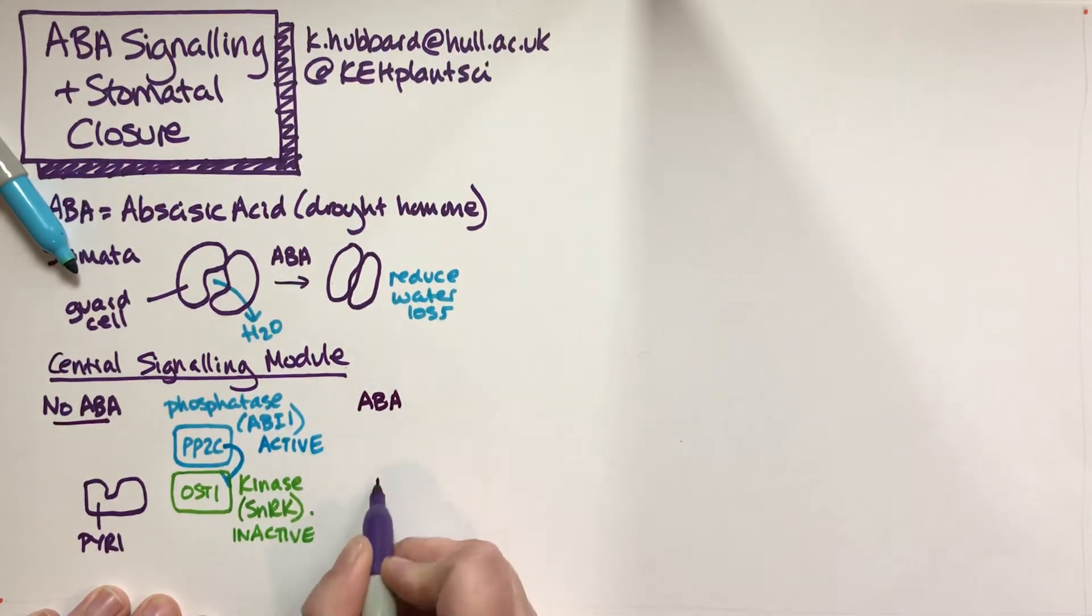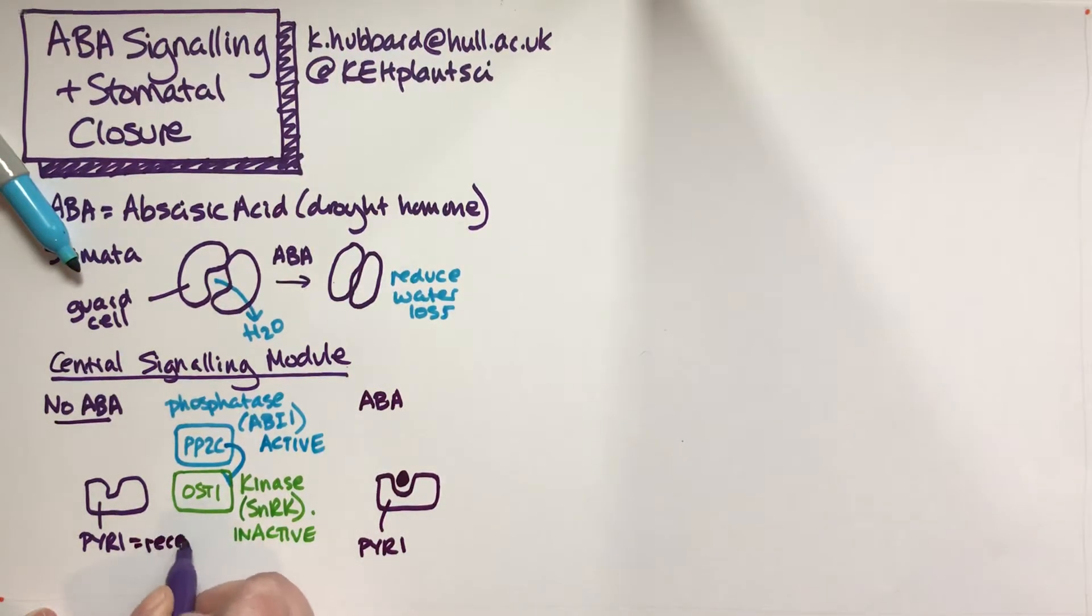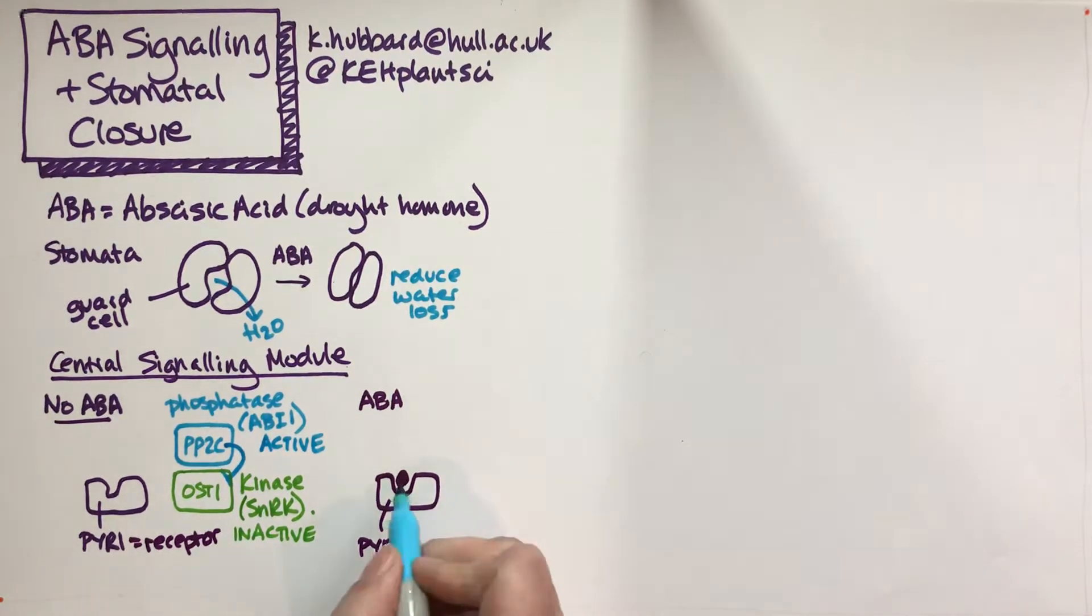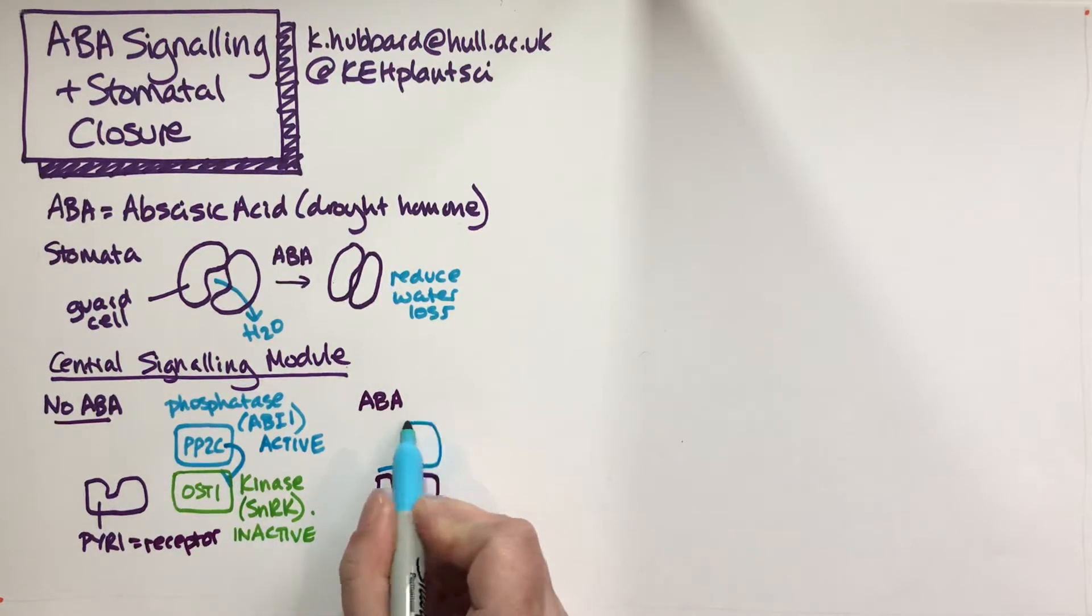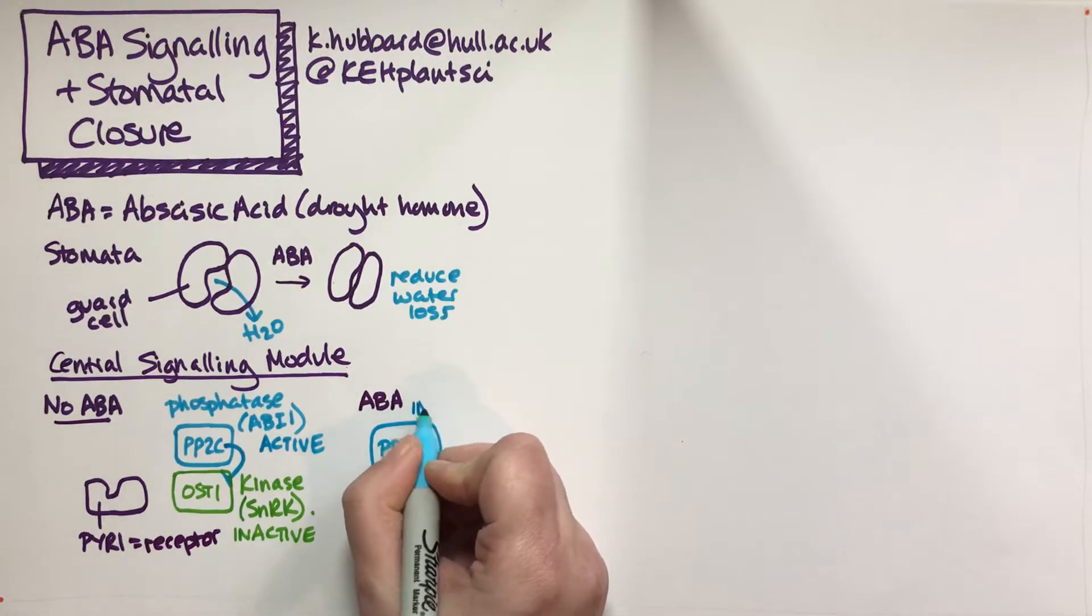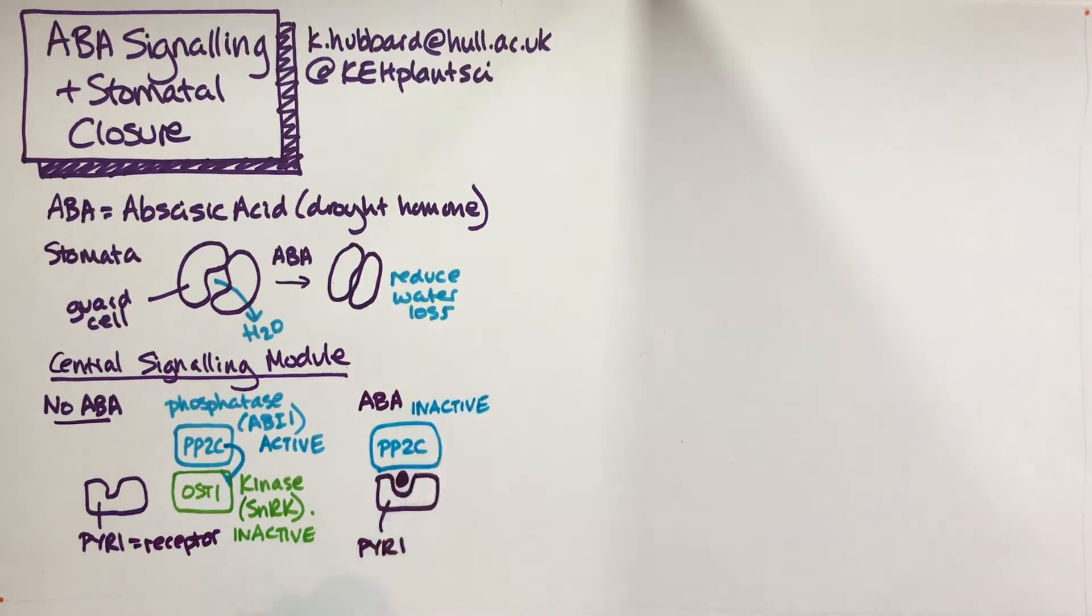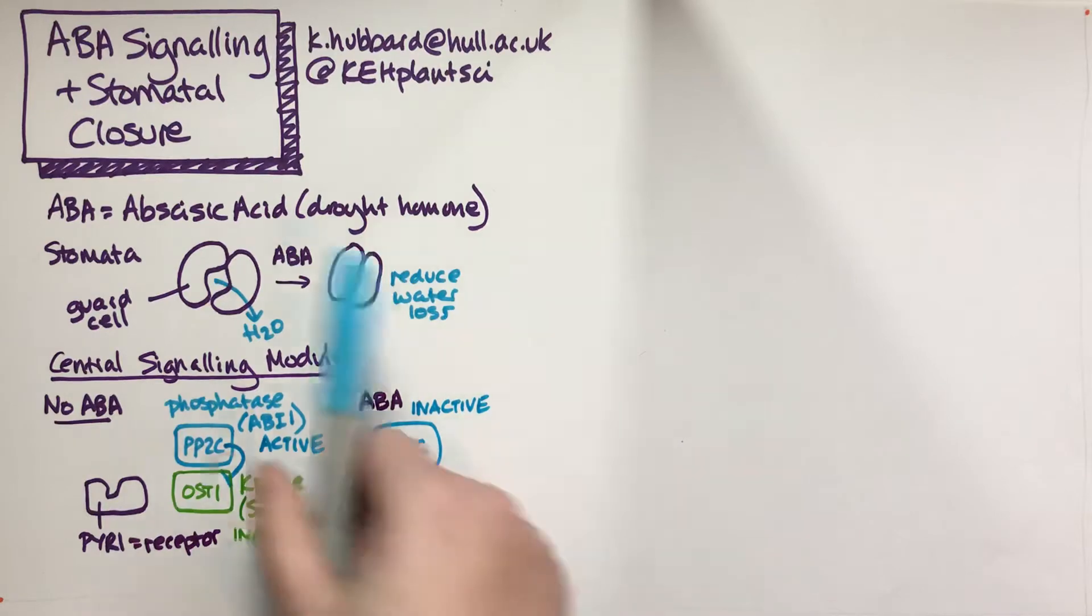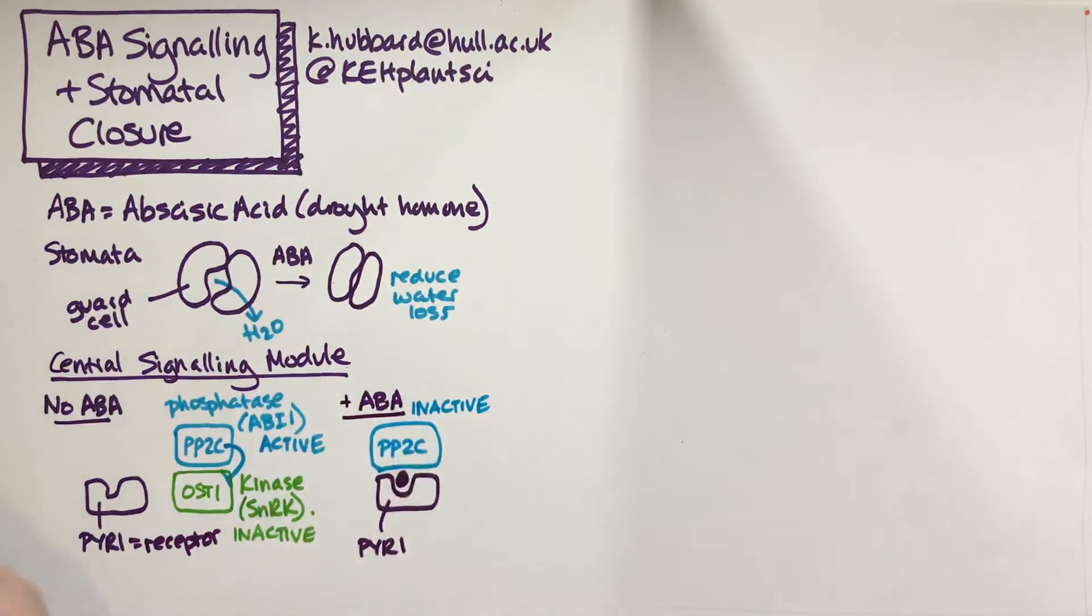When ABA comes along, it binds to PYL1, which is the receptor. PYL1 with ABA has a really high affinity for PP2C, so PP2C sticks to PYL1. The PP2C is then inactive because it's stuck to PYL1 and can't do anything. This releases OST1, which is now active.